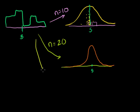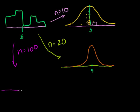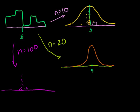And if we did it with an even larger sample size — let's say n is equal to 100 — what we're going to get is something that fits the normal distribution even better. We take 100 instances of this random variable, average them, plot it, and keep doing that. It's going to be a much closer fit to a true normal distribution, and even more obvious to the human eye, it's going to be even tighter — a very low standard deviation.